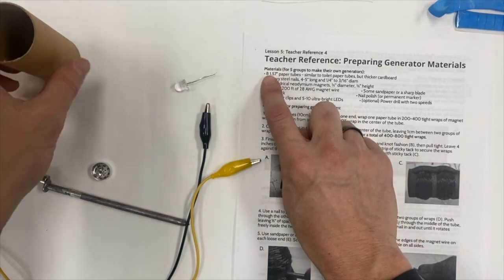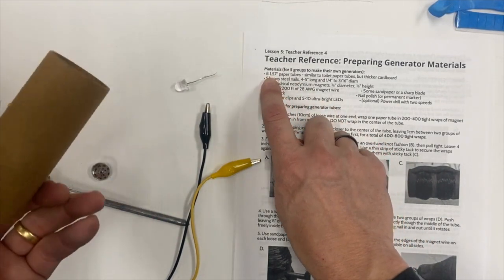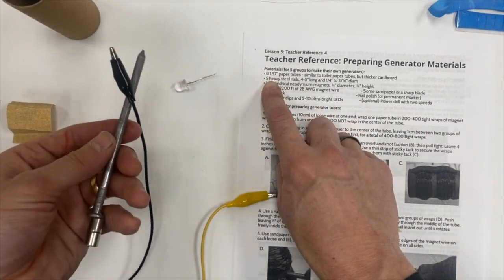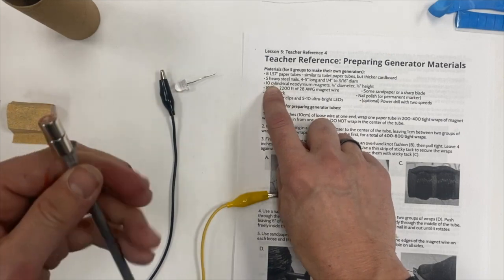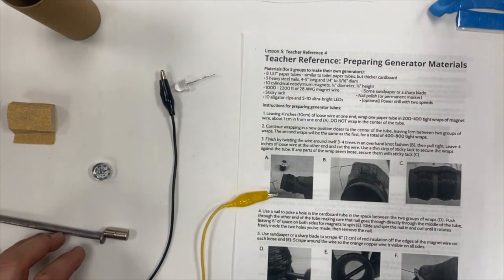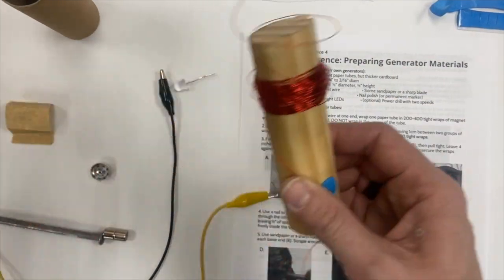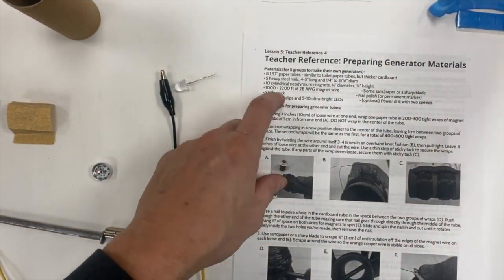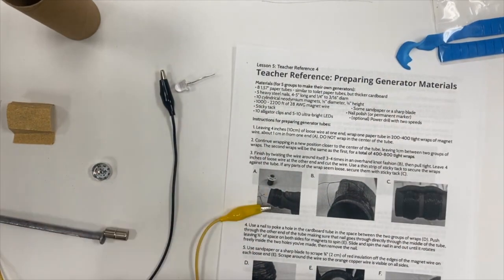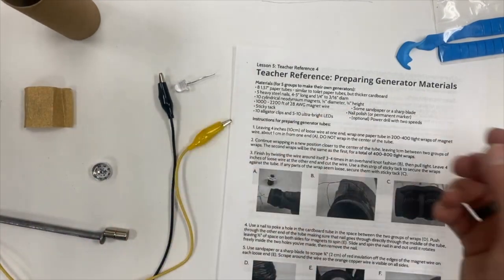Notice here I've got enough materials to make one of these, but you will need more to make a class set. One paper tube, one very heavy steel nail, two cylindrical neodymium magnets. I have much less wire than you will need because I'm just going to show you a small version, but you'll need a lot of this magnet wire, some sticky tack to hold it all together, and some alligator clips and sandpaper.